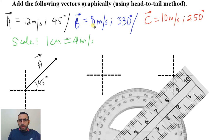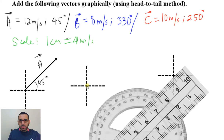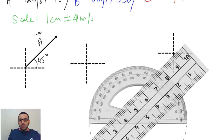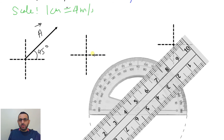For B we do the same thing: 8 meters per second, so 2 centimeters, and 330 degrees. The first quadrant is from 0 to 90, the second from 90 to 180, the third is 180 to 270, and the fourth is 270 to 360. So 330 degrees will be in the fourth quadrant.